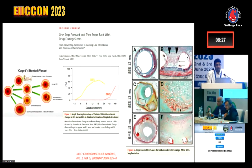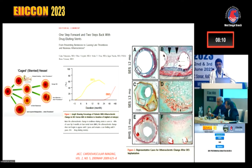After the development of DES, we thought we had tackled restenosis, but we are two steps back because with DES implantation, neoatherosclerosis has been found to occur earlier and more severely compared to BMS. In BMS, neoatherosclerosis is usually absent before two years and very low before four years. In the case of sirolimus-eluting stents, neoatherosclerosis has been found as early as nine months.